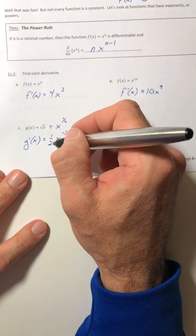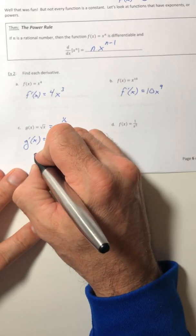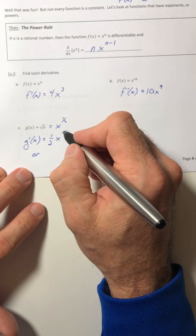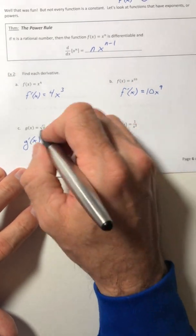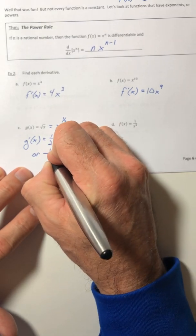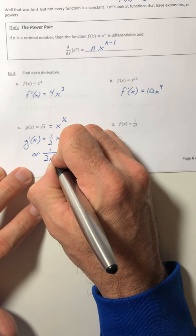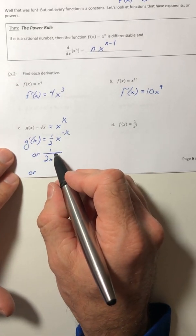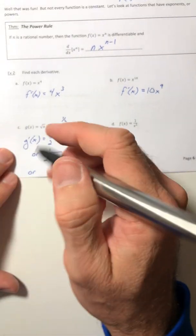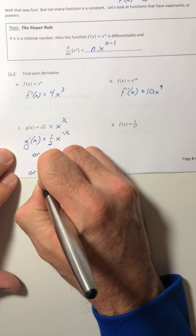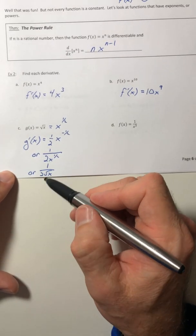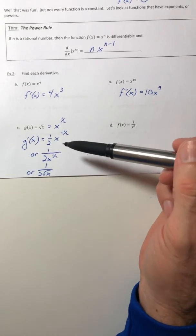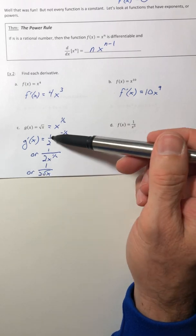Now, this is not the only way to write this answer, so you do have to be aware that this can be rewritten. First of all, the negative exponent can be flipped down. So, one-over-two x to the half, and then the fraction exponent can be rewritten as a radical. So, one-over-two root x. Now, I get students all the time going, well, which one do I do? Well, that's what that word, or, means. You can do any of the three.